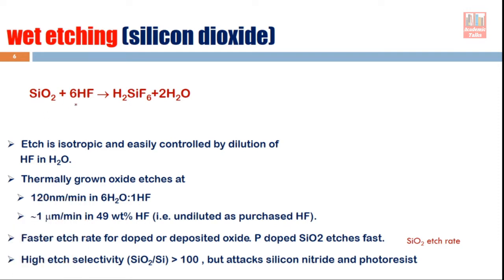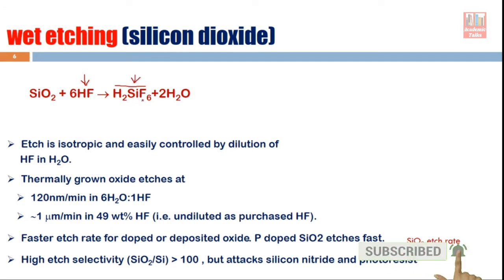Silicon dioxide is etched with HF — hydrofluoric acid. When silicon dioxide interacts with hydrofluoric acid, it produces a soluble product and water. The etching is isotropic. It is easily controlled by diluting HF with H2O. If we use only undiluted HF, the reaction becomes very fast, which is difficult to control, so it is always desirable to keep the reaction slow enough to be controllable.